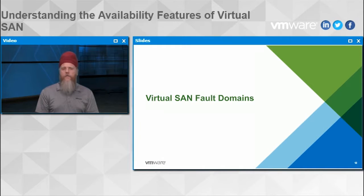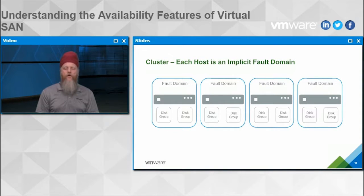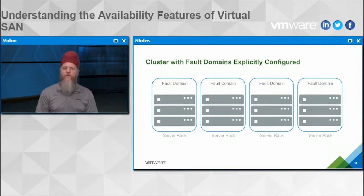Next let's get into vSAN fault domains. At a basic level, each host within a vSAN is considered a fault domain — an implicit fault domain. From a failures-to-tolerate standpoint, each host represents one failure domain. With four hosts and failures to tolerate set to one, we can actually tolerate the failure of two hosts without impacting running VMs. The concept of fault domains can be expanded to encompass multiple hosts.